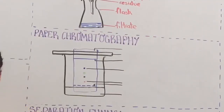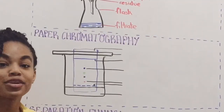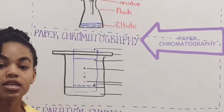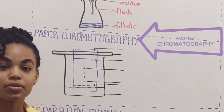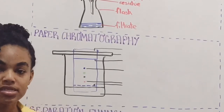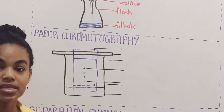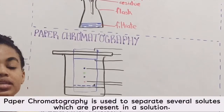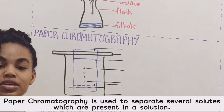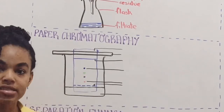The method we're going to look at now is paper chromatography. This method is used to separate different solutes that are present in a solution. Typically these solutes are colored — for example, your inks.